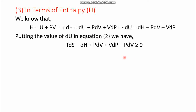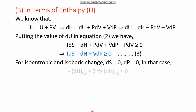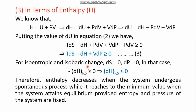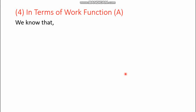From equation 3, H is visible and we need to trim entropy and pressure. For isoentropic and isobaric change (dS = 0 and dP = 0), the equation reduces to -dH ≥ 0, or dH ≤ 0 at constant P and S. Therefore, enthalpy decreases when the system undergoes a spontaneous process and reaches its minimum value at equilibrium, provided entropy and pressure of the system are fixed.